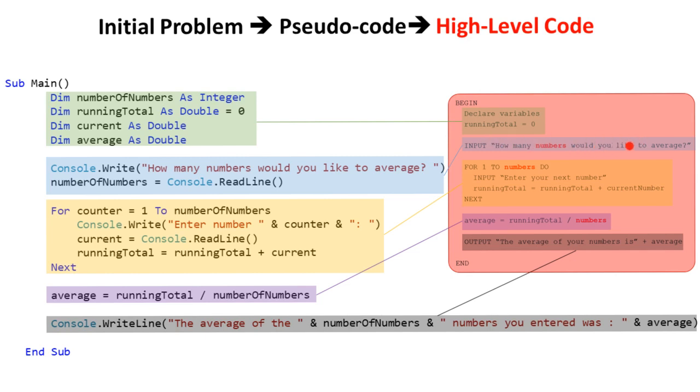Here I ask how many numbers I'd like them to average, and that's turned into two lines of code in Visual Basic, a write message to the screen and the ability to read in the number and store it in my local variable. Here's my loop with my two lines.